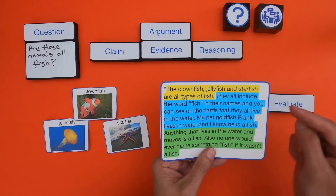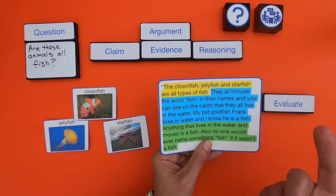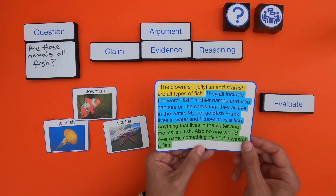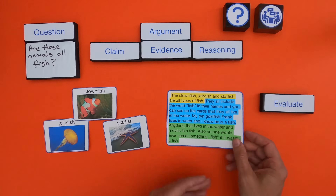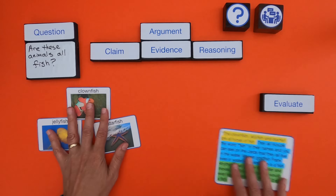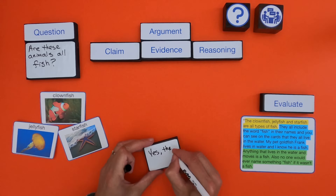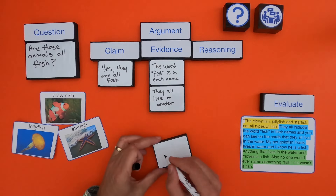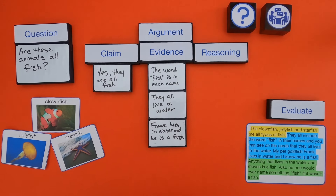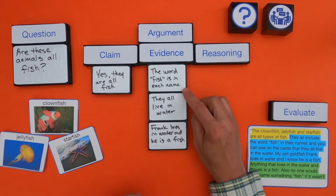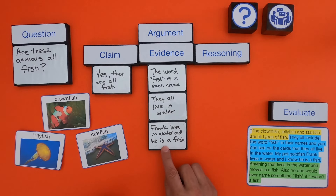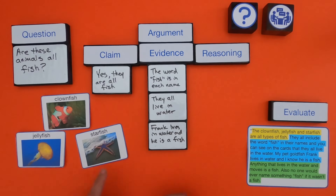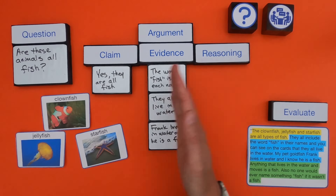What I've done is highlight the different parts of the argument. The yellow part is the claim. The blue part is going to be the evidence — things like they have fish in their name or they live in the water. And then the reasoning is at the bottom: anything that lives in water and moves is a fish. So a lot of that 'because' language is going to be their reasoning. I'll lay out the argument and then we'll evaluate it. The claim they're making is they're all fish. The evidence: the word fish is in each name, they all live in water, and Frank lives in water and he is a fish.